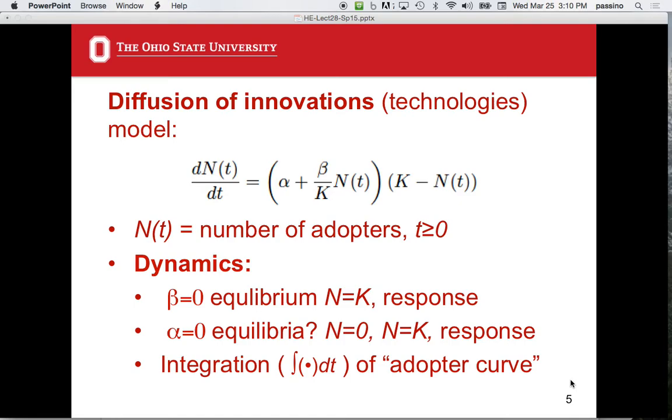Can somebody simulate this in their head? Tell me what happens in that case, still beta equals zero. What happens to N of T as T goes to infinity for the case where alpha is positive and K is positive? Where does N of T go? To K. Exactly. It's K. Why? Because when K is equal to N of T, then we know the slope is zero. You computed the equilibrium. That's what you did.